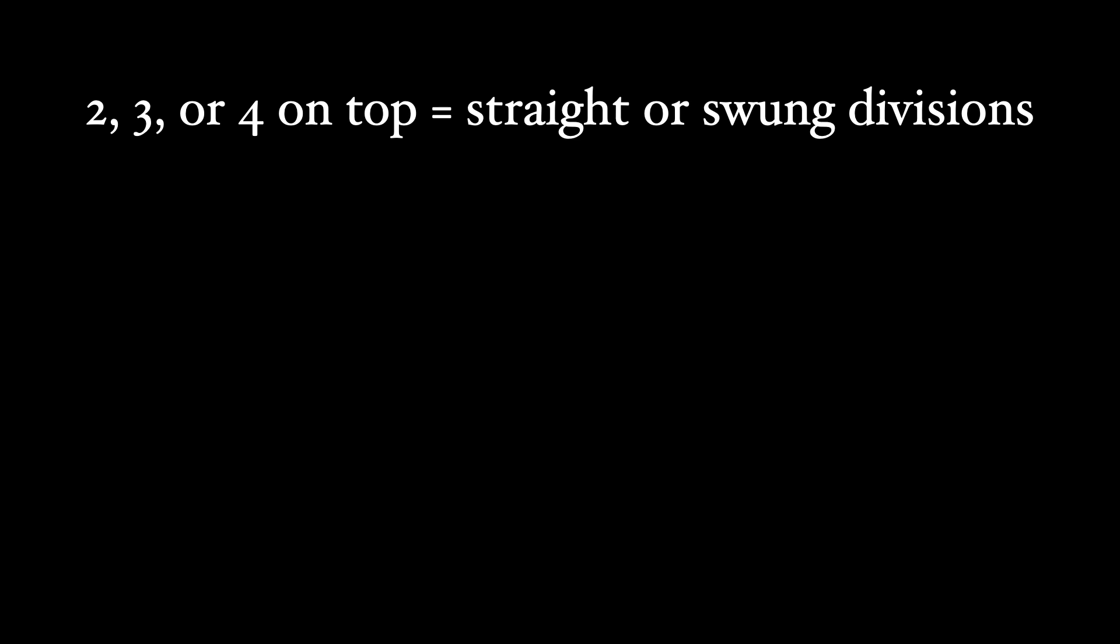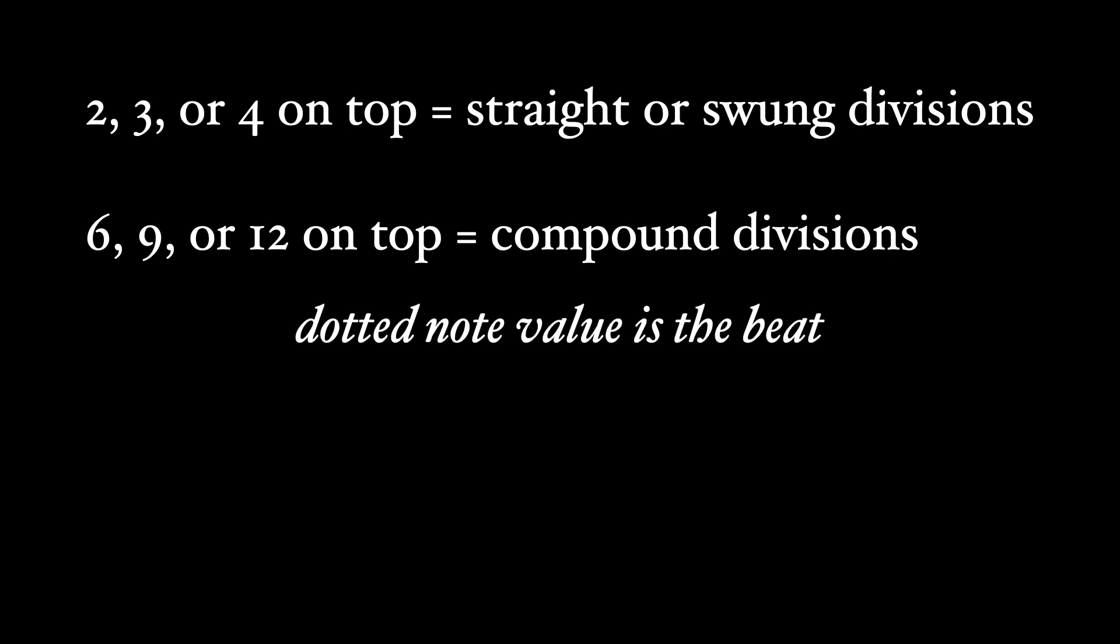So what about those compound divisions? Time signatures with compound divisions, which as you remember is three equal divisions per beat, have six, nine, or twelve as the top number. Why? To have beats divide into three equal divisions, you need to use a dotted note value as the beat.